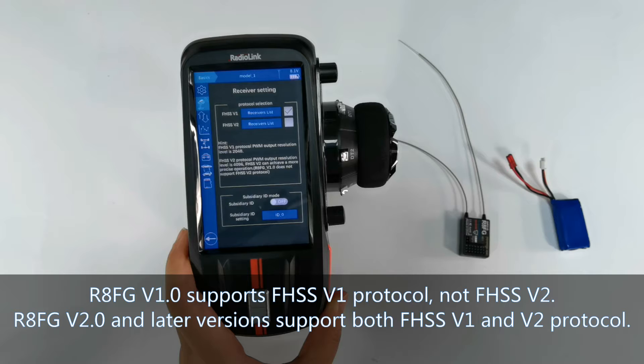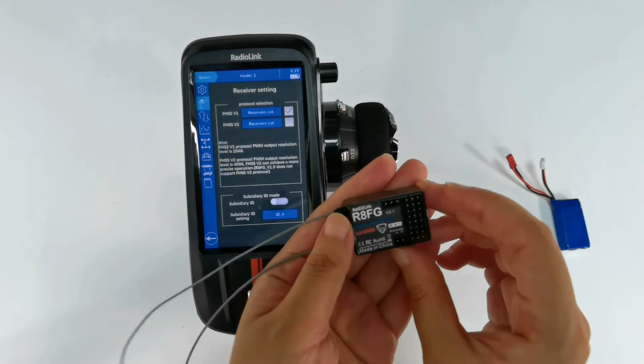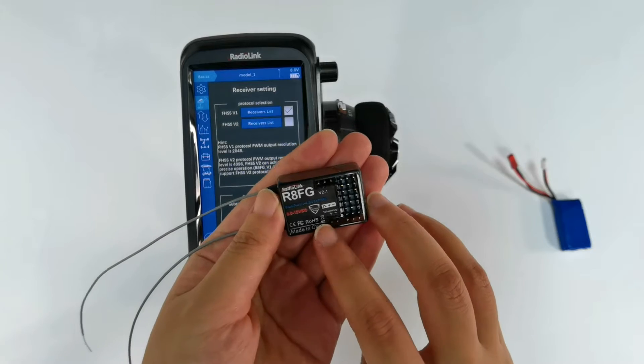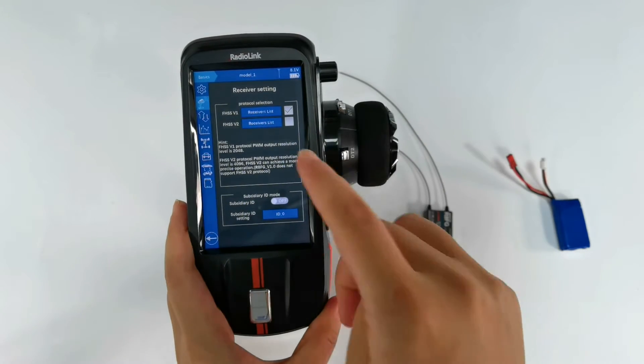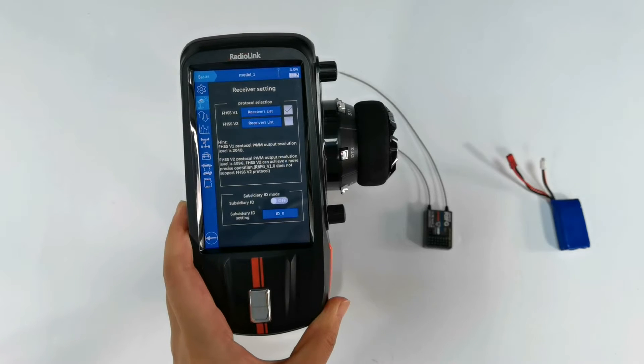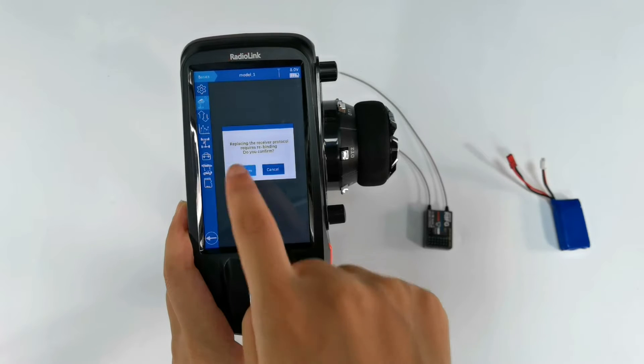We can see that R8FG version 1.0 does not support FHSS v2 protocol. R8FG version 2.0 and later versions support both v1 and v2 protocol. This is R8FG version 2.1.0. It supports both v1 and v2 protocol. So I select FHSS v2 protocol. Confirm.